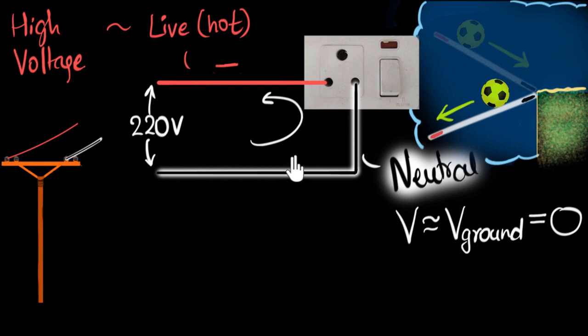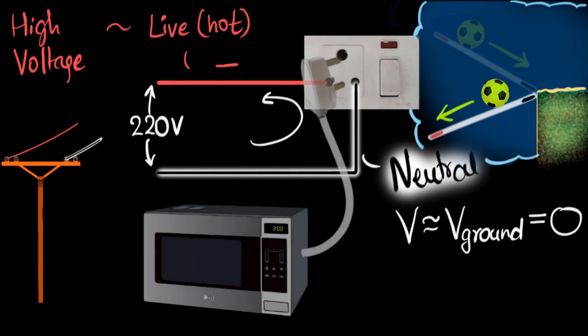If the two wires are enough to provide electricity, why do we need a third pin? To answer that question, let's attach something to this plug point. Let's attach a microwave.